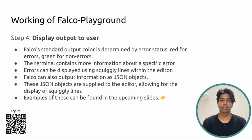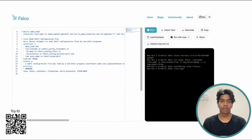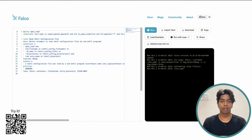Now let's look at the error handling part of Falco Playground. Errors are displayed in multiple locations — in the editor as squiggly lines and in the terminal as plain text. Terminal errors are also color-coded for visual cues. In the successful case, the console message in the right-hand corner displays output in a reassuring green color, signifying that validation was successful.